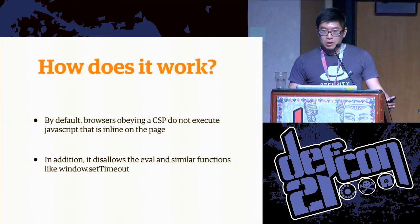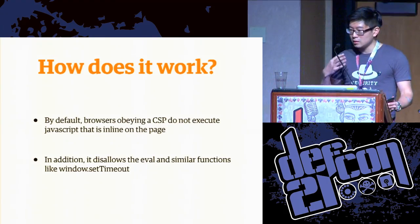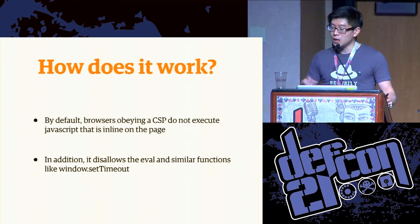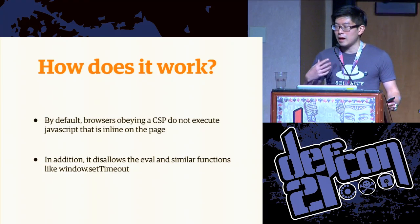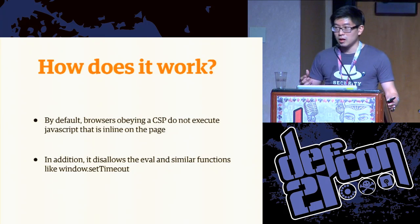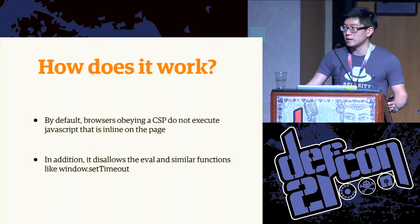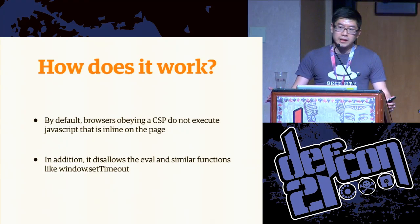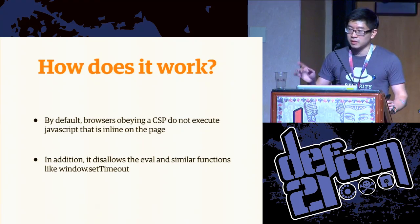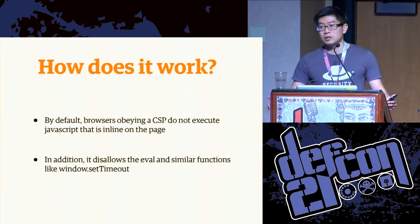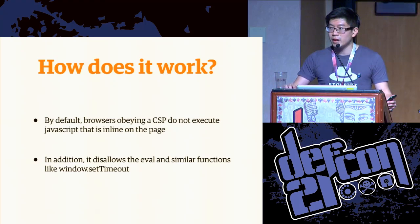Now for more detail, the way it works is that a browser following a content security policy only follows specific directives specified by the content security policy as elements it's allowed to render or execute on the page. In particular, two important things: content security policy by default disallows the use of inline JavaScript on a page, which is a big thing I will get to later. And in addition, it prevents the use of the eval-style family of functions in JavaScript.